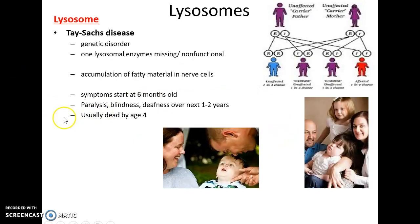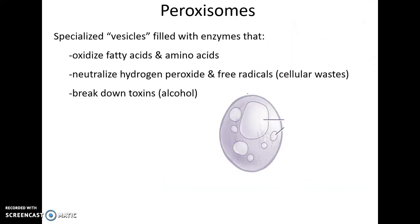Tay-Sachs disease is a genetic disorder caused by a non-functioning protein, leading to severe fatty accumulation in nerve cells, causing the degradation and death of affected children by around age four.